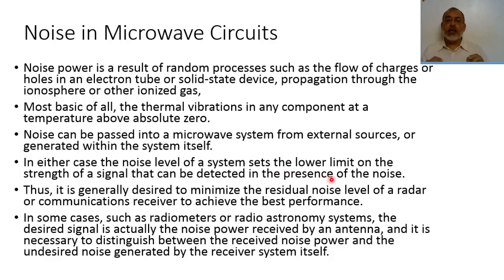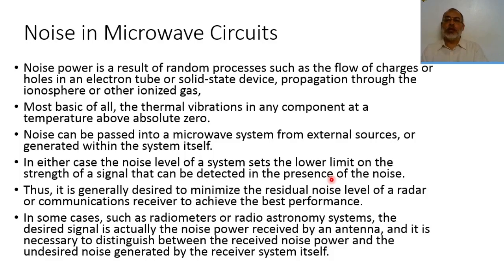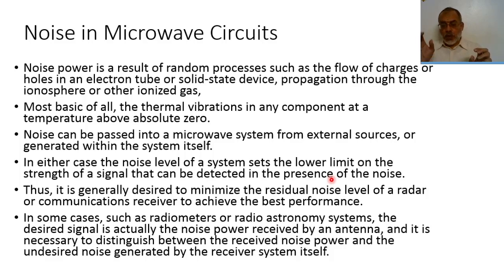If the signal is less than the noise level, it cannot be detected. So the input signal to the receiver should be slightly greater than the noise level, and after amplification the output signal should also be greater than the output noise level. The output noise is greater than the input noise because the output noise includes the external noise amplified by the circuit, plus the additional internal noise generated within it.